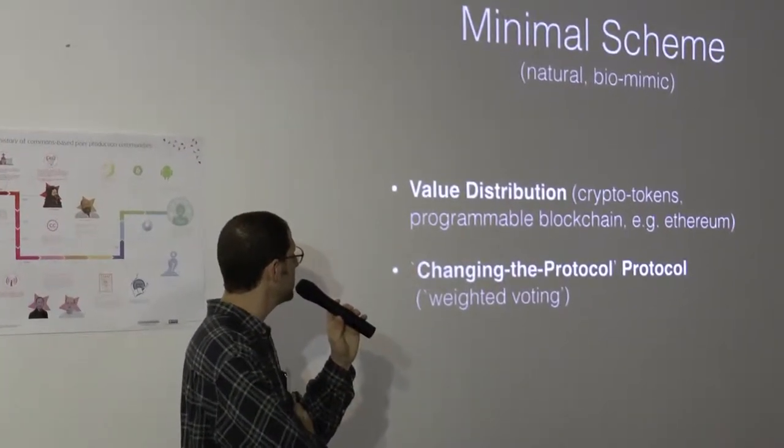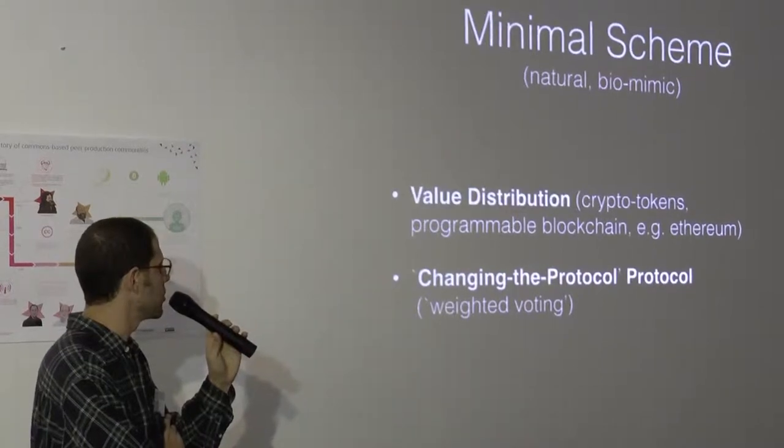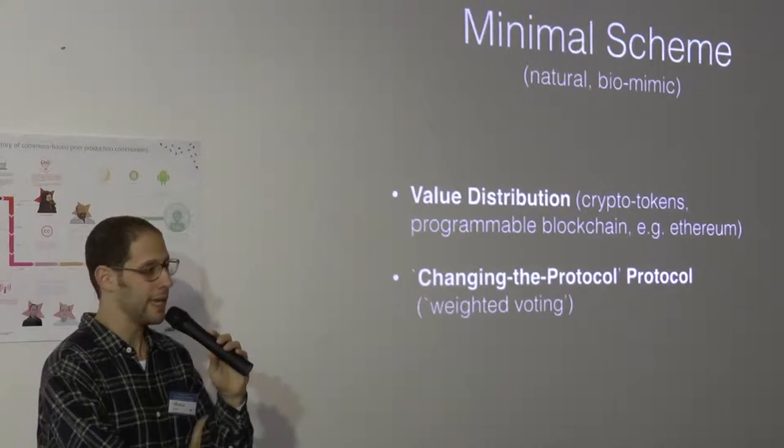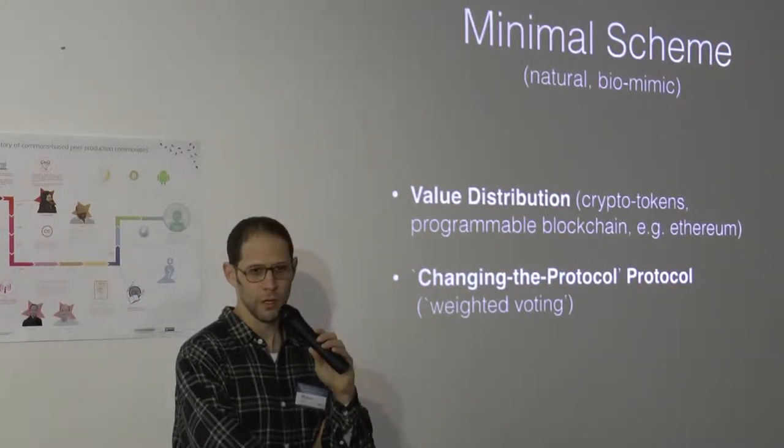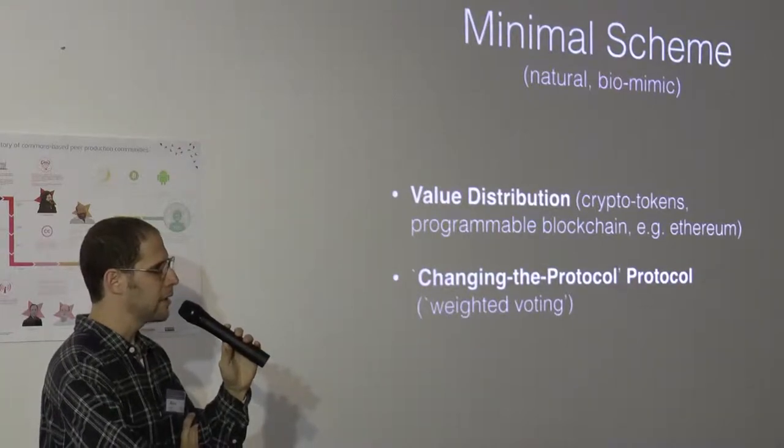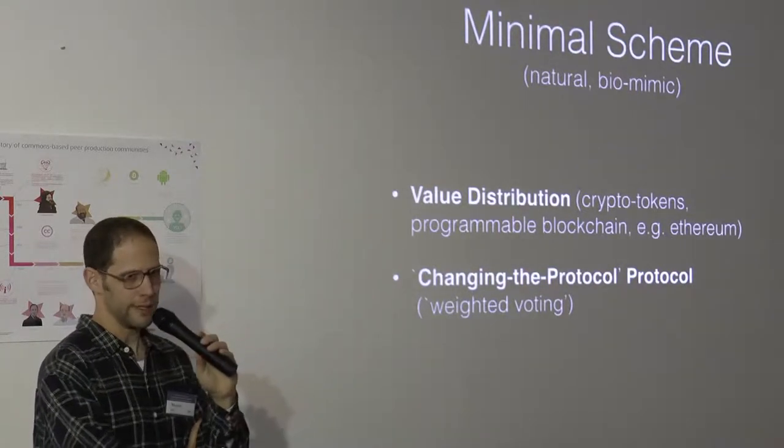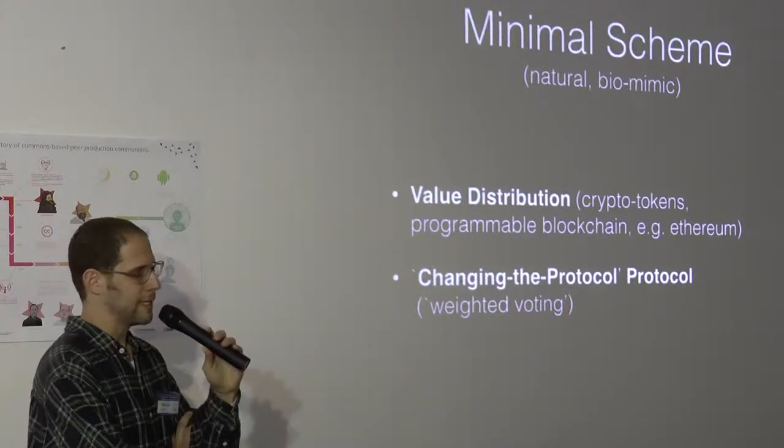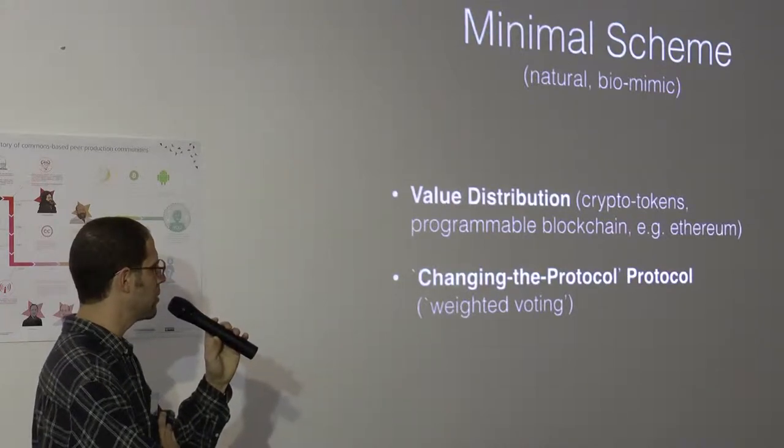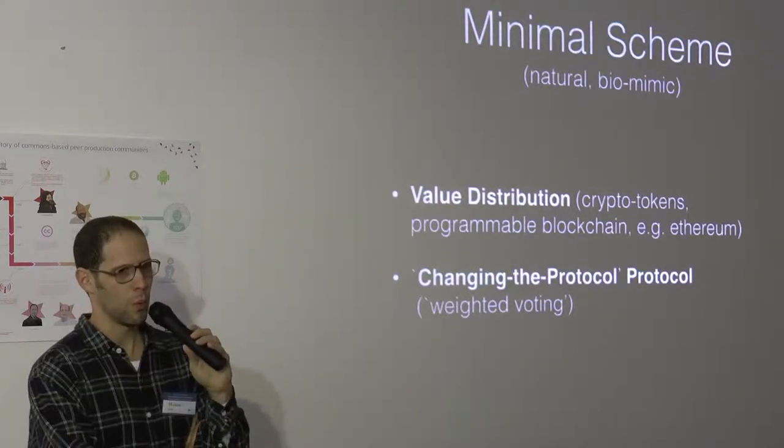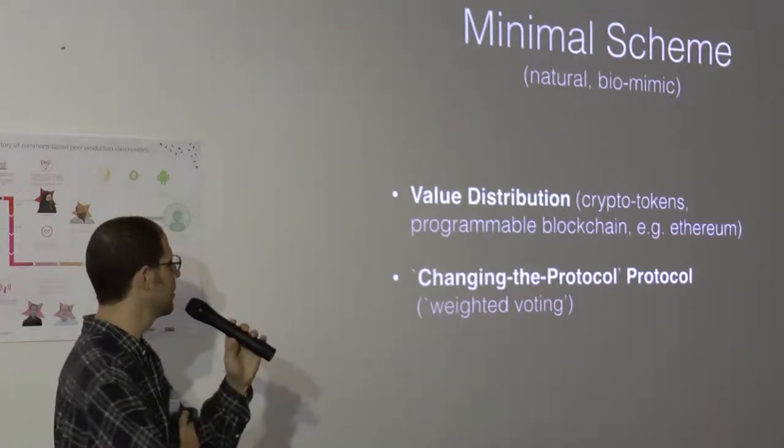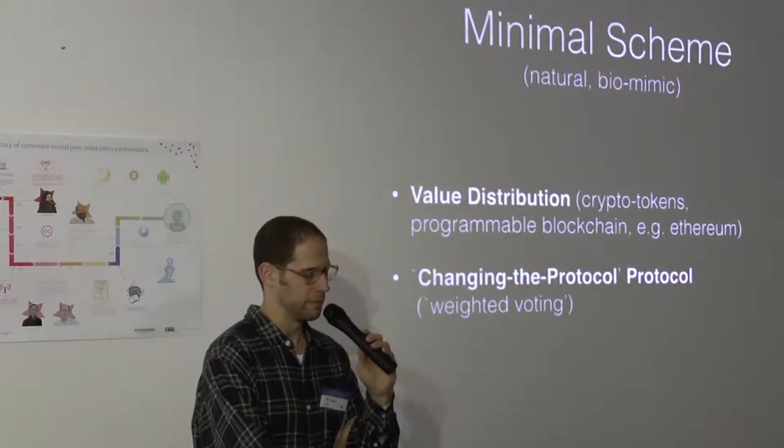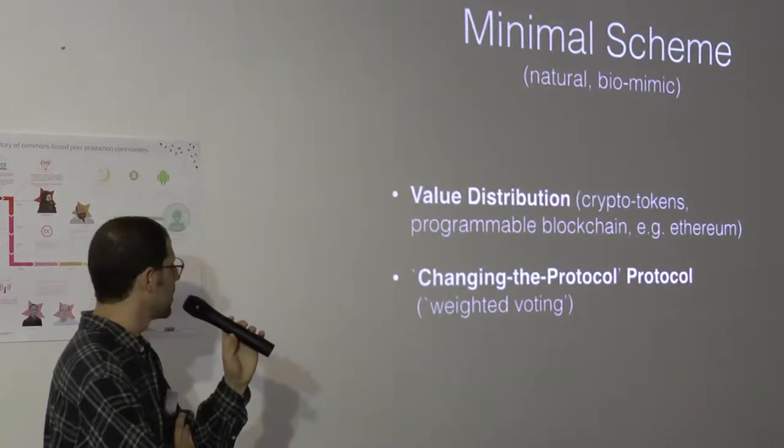I claim that the main thing to be defined by the protocol is only the value distribution. Value distribution means that now we are millions of people, we are free actors, anyone can contribute in any way she wants to contribute. And the community needs to evaluate that contribution and distribute value in terms of tokens to that actor. Here's where it comes in, the crypto tokens - that's the way to distribute value for that contributor in terms of crypto tokens. And that's where it enters the programmable blockchain, for example, Ethereum.